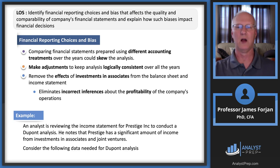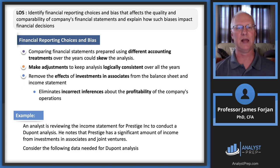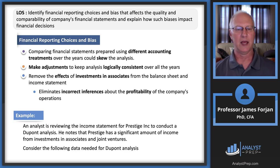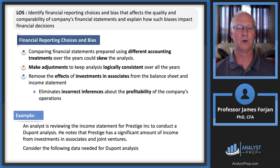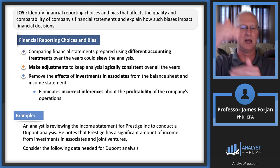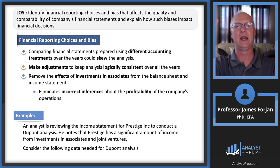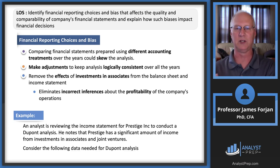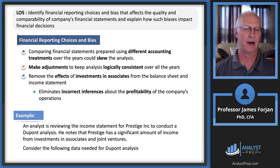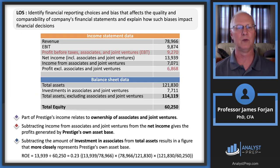Here's the example: Prestige Inc. conducts a DuPont analysis. The analyst notes that Prestige has a substantial amount of income from investments in associates and joint ventures — similar to the Nestle situation. If it's 90 coming from associates and 10 from the company itself, the underlying company is probably struggling by itself. But if it's the other way around, we want to make sure we know that.